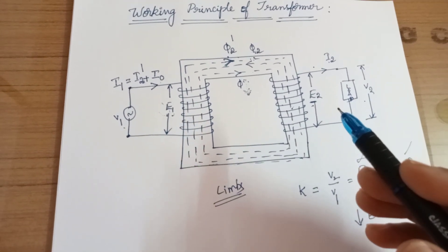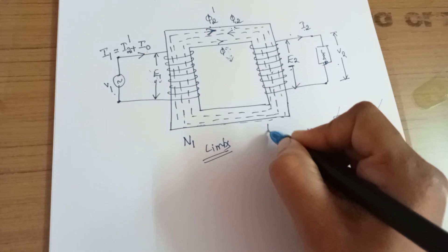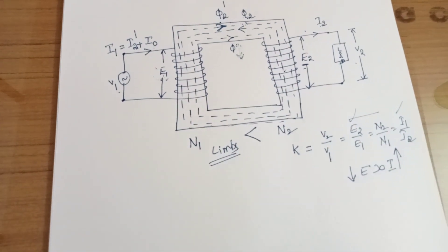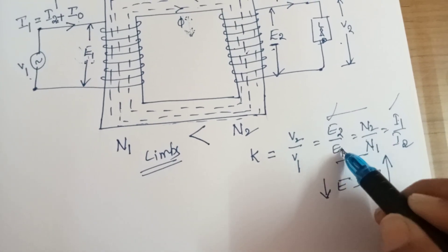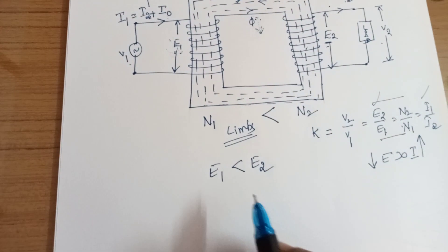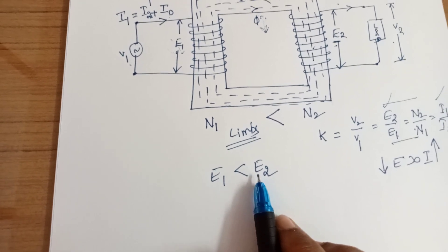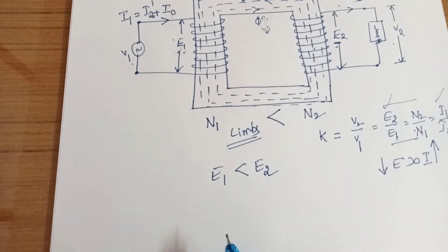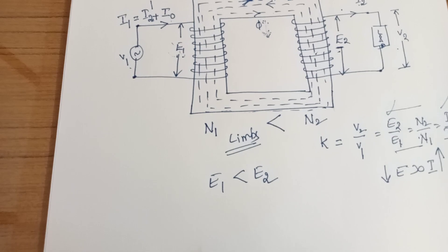Depending on the number of turns — let N1 be primary turns and N2 be secondary turns — if N1 < N2, then since E2/E1 = N2/N1, we get E2 > E1, meaning secondary voltage is greater than primary voltage: this is a step-up transformer. If N1 > N2, then E1 > E2: this is a step-down transformer. If N1 = N2, then E1 = E2: this is a 1:1 transformer.